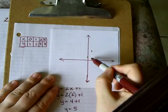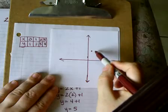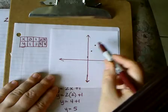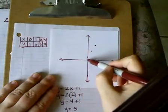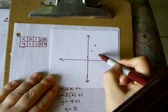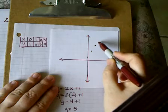My next ordered pair is 2, 5. 1, 2, 1, 2, 3, 4, 5. Put a point. And 3, 7. 1, 2, 3. 1, 2, 3, 4, 5, 6, 7.